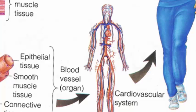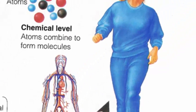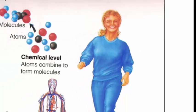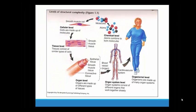Various organ systems, which we will list later in the lesson and throughout the course, function to allow this organism to live and participate in activities such as jogging. Just remember, we are moving from the smallest components into the organism as a whole.